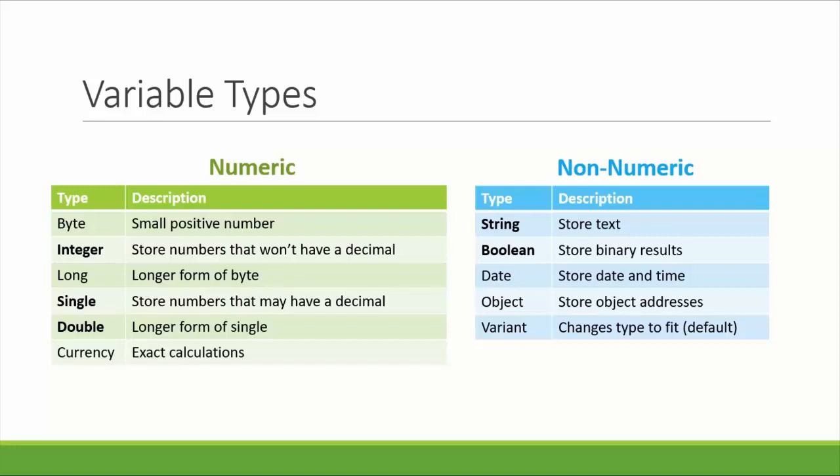Object variables store object addresses, which we'll talk about in the details of coding VBA. Variant types are the default type of variable in VBA. If you don't explicitly declare your variable type, but rather let VBA determine the variable type for you, it will assign a Variant type variable. This is a variable type that will actually change its type to accept whatever type of data you're trying to store in it. While this sounds like a good thing at first, it's actually highly inefficient and can slow down your code significantly, so it's best to declare your variable type to fit what you are actually using.